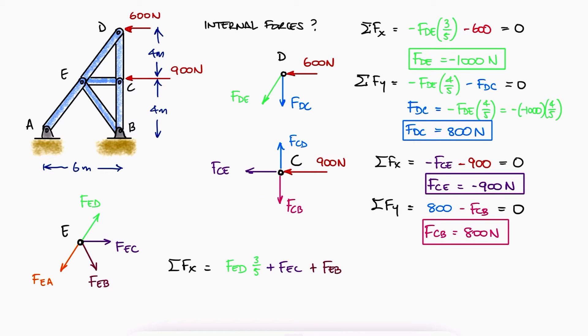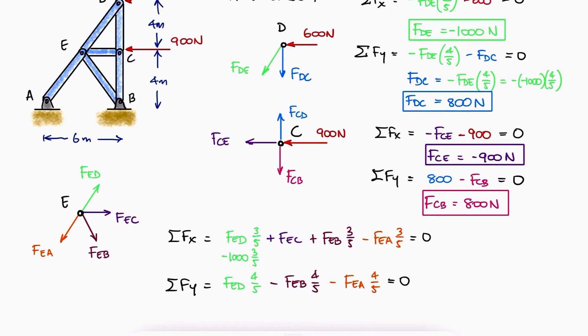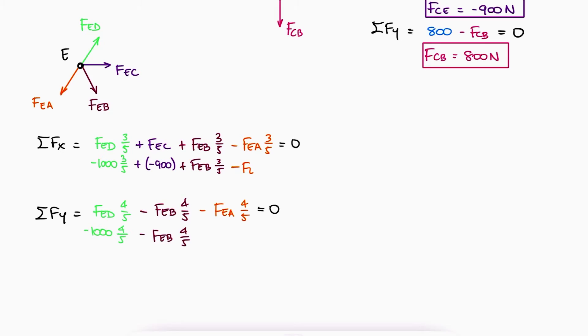Finally, at joint E, we can write the sum of forces in X and Y and substitute the known values, knowing that FED and FDE have the same magnitude and there's no need to add a negative sign because the vector directions are taking care of that to find a system of two equations and two unknowns.